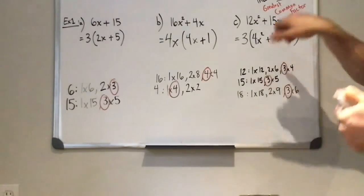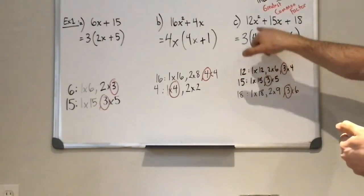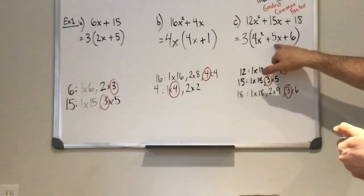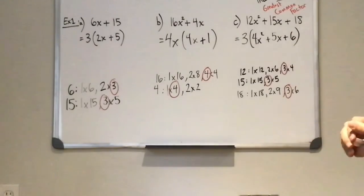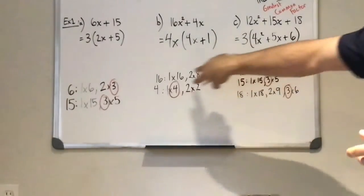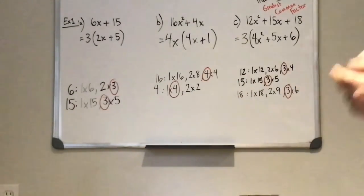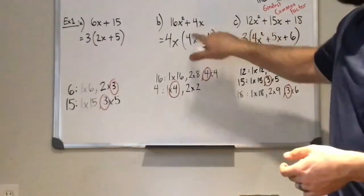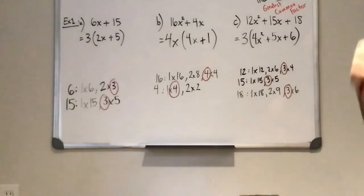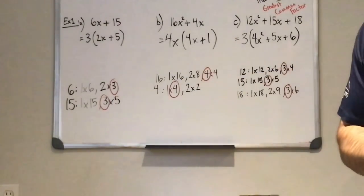Alright. So this one's all done. Again, we can double check. 3 times 4x squared is 12x. 3 times 5x is 15. 3 times 6 is 18. So list out all of the factors, find the biggest number that's in all the lists, and divide it out. If there's an x term in both of them, then we can take out x's as well. But we want to first start off with the numbers and then check out our variables.